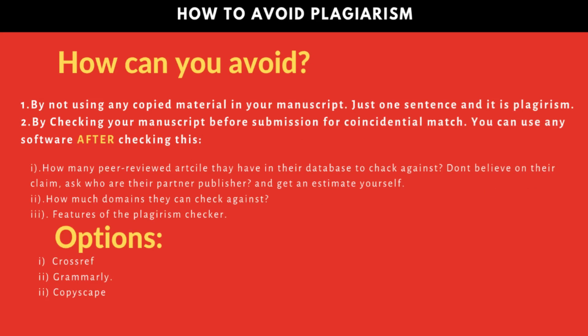The last and most important slide is how to avoid plagiarism. There are only two things you can do. The first is by not copying any material in your manuscript without citing — as mentioned, just one sentence and you are in trouble. The second is by checking your manuscript before submission for coincidental matches. You might write a very short sentence that someone has already used. There might be some coincidental matching, so check your manuscript before submission.